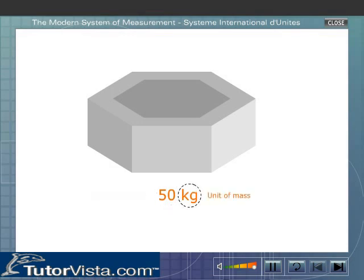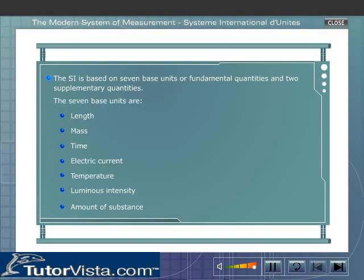For example, mass of a body is represented as 50 kilograms, where 50 is the numerical part and kilogram is the unit of mass. The SI is based on seven base units or fundamental quantities and two supplementary quantities. The seven base units are length, mass, time, electric current, temperature, luminous intensity, and amount of substance.